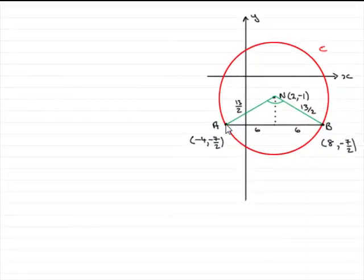In this part of the question, we need to find angle ANB, which I've marked here. I've also marked the radius which we got from part B—the length was 13 over 2.